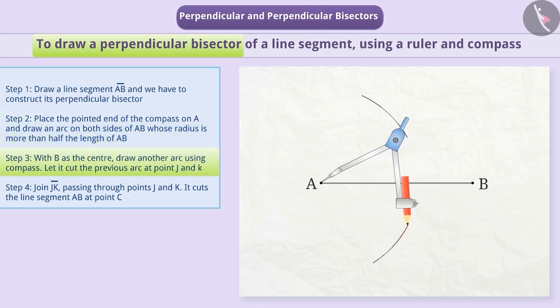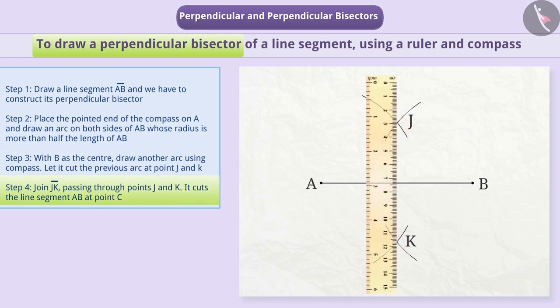Step 3: With the same radius and with B as centre, draw another arc using the compass. Let it cut the previous arc at point J and K. Step 4: Join JK. It cuts the line segment AB at point C.